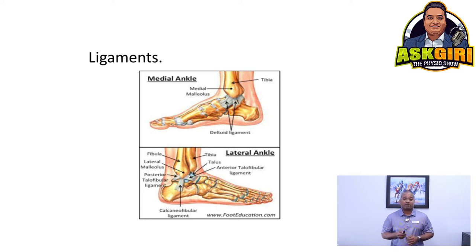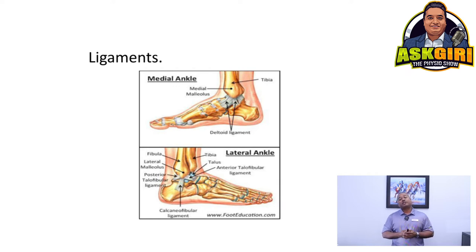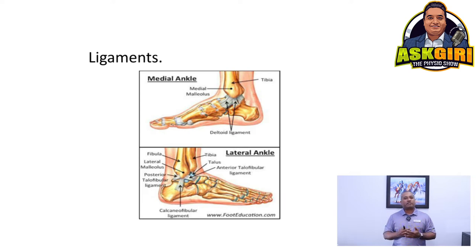Looking at ankle anatomy: on the medial side you have the deltoid ligament — a very strong thick band — which is rarely sprained. The lateral ankle sprains quite often. On the front you have the anterior talofibular ligament and the anterior tibiofibular ligament; on the side the calcaneofibular ligament; and the posterior ligaments in the back. The anterior talofibular ligament is the weakest and most commonly injured. The calcaneofibular ligament can take 3.5 times more load.